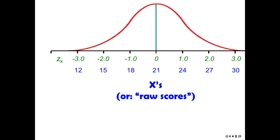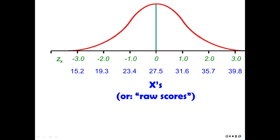For the percentage of cans recycled, say the average is 21% and the standard deviation is 3%. So 18% in this distribution is a Z-score of negative one, 15% is a Z-score of negative two, 24% is a Z-score of one, and 27% is a Z-score of two. For body mass index, say the mean is 27.5 and the standard deviation is 4.1. A BMI of 31.6 is plus one Z-score, 35.7 is plus two. Going down, a BMI of 23.4 is a Z-score of negative one, and 19.3 is a Z-score of negative two.